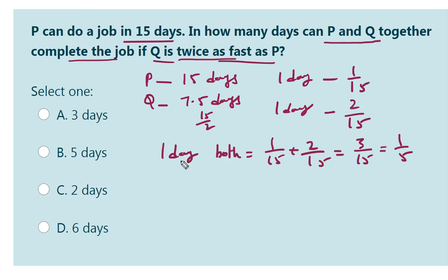Both persons' 1 day work is 1 by 5. So, complete work can be done by both of them in 5 by 1 days, that is equal to 5 days. Answer is 5 days.